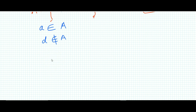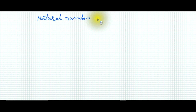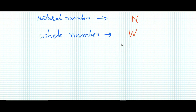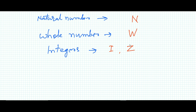There are certain special sets that are normally represented by a particular capital letter. Natural numbers are represented by capital letter N, whole numbers are denoted by capital letter W, and integers are denoted by letter I or Z. In your book you will also find that natural numbers are denoted by N, whole numbers by W, and integers by Z.